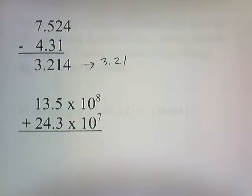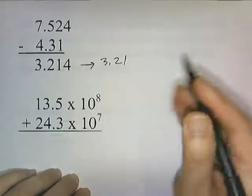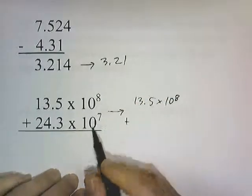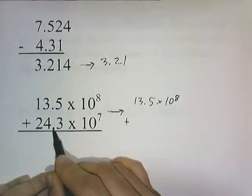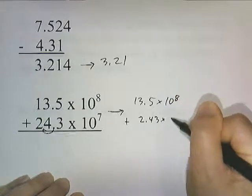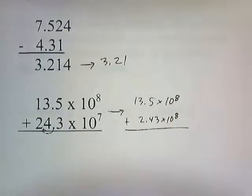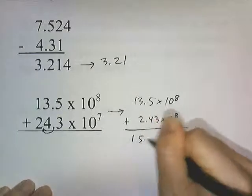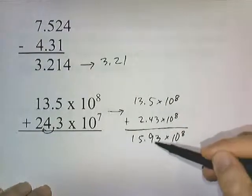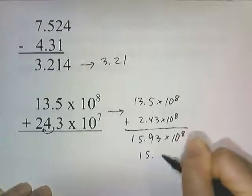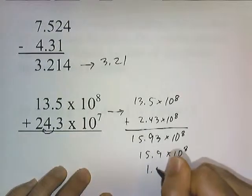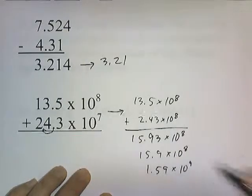When adding numbers in scientific notation with different powers of 10, we first convert them to the same power. Rewriting the second number to a power of 8 gives 2.43 times 10 to the 8th. Adding gives 15.93 times 10 to the 8th. The first number has one decimal place and the second has two, so we round to one decimal place: 15.9 times 10 to the 8th, or equivalently 1.59 times 10 to the 9th.